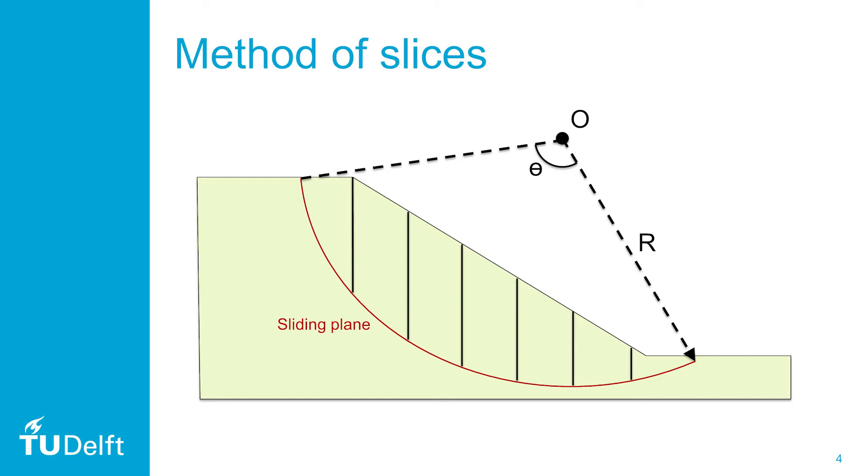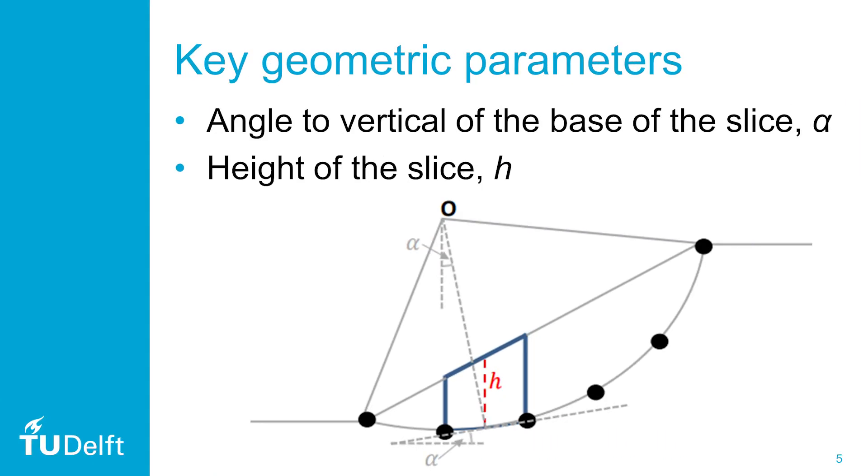Before we go into either method, let's have a look at how we can get the key geometric features from our described slope. Two things are needed to determine the geometry of each slice. The angle between the vertical through the origin point and the base of the slice equals alpha. The height of the slice h is evaluated at the center of the slice. We make the assumption that the curved surface of the slice is straight. This also explains why more slices will give a more accurate solution, and the width of the slice is in that case smaller, resulting in less of a simplification of the problem.